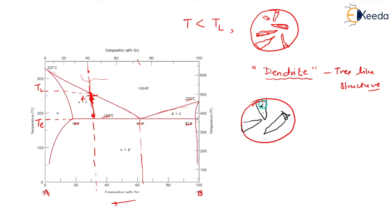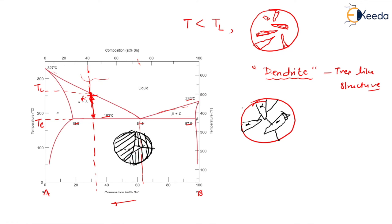Now, just below the eutectic temperature T, the alpha and beta are present in the form of laminae — that is a lamellar or slab-like structure of alpha and beta. Alpha and beta already exist below T. So, the alpha grown in the dendritic fashion exists from TL down to T, and below T, the alpha and beta are grown in a layer-by-layer lamellar structure.